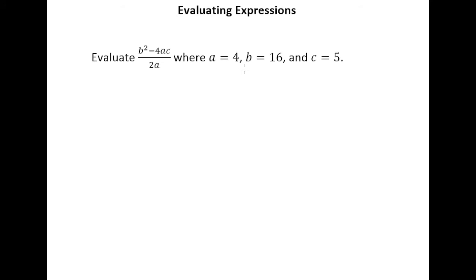Wherever we see an a we're going to put a 4, wherever we see b we'll put a 16, wherever we see c we'll get a 5 in there. Also remember whenever letters or numbers are next to each other that's going to mean multiplication, so 4ac means 4 times a times c.